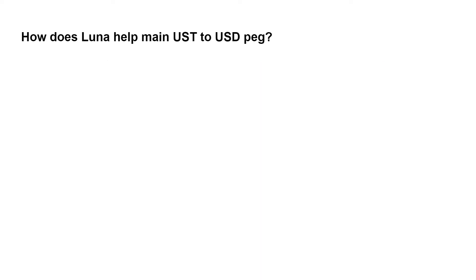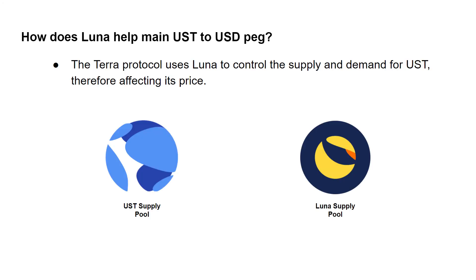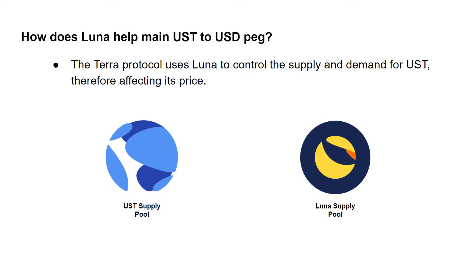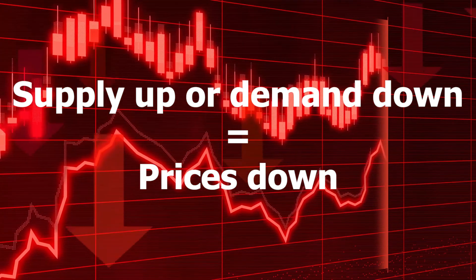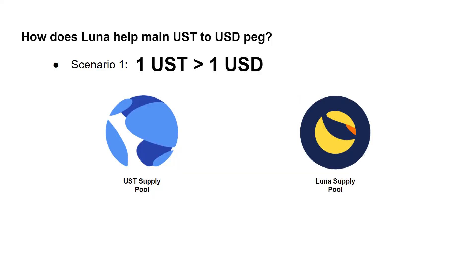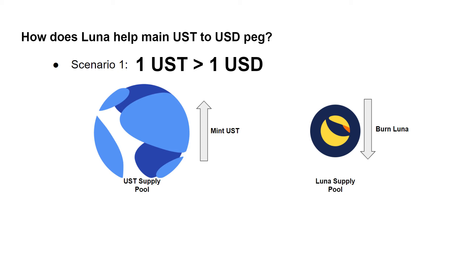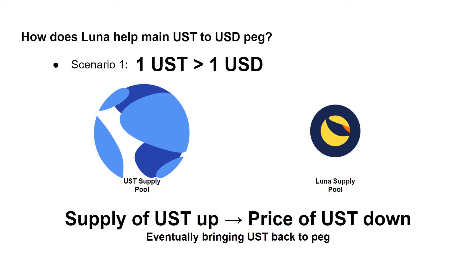It's time to answer how the LUNA token helps maintain UST's peg to USD. It's a common misconception that LUNA is collateral to UST and that every $1 worth of UST is backed by $1 worth of LUNA — that is not true. Think of the Terra economy as two pools: one for the supply of UST and one for the supply of LUNA. As supply of an asset increases, its price drops; as demand increases, its price goes up. When there is increased demand for UST, the price rises above $1. To bring it back down, the protocol incentivizes users to burn LUNA and mint UST, increasing the UST supply and driving its price back down.